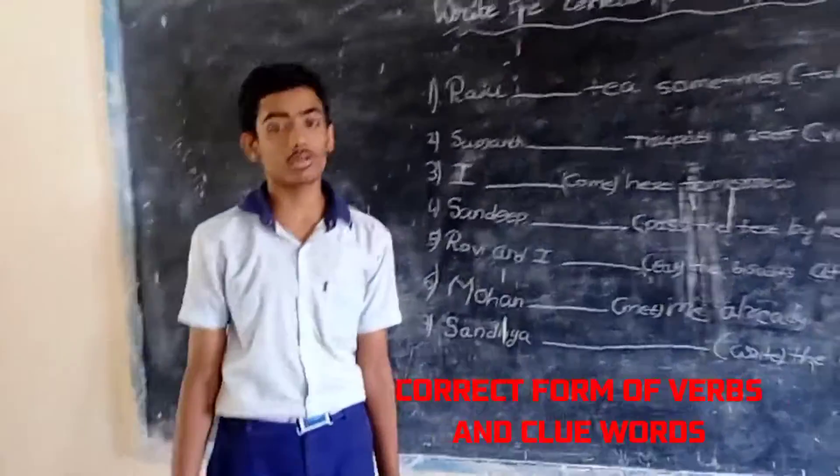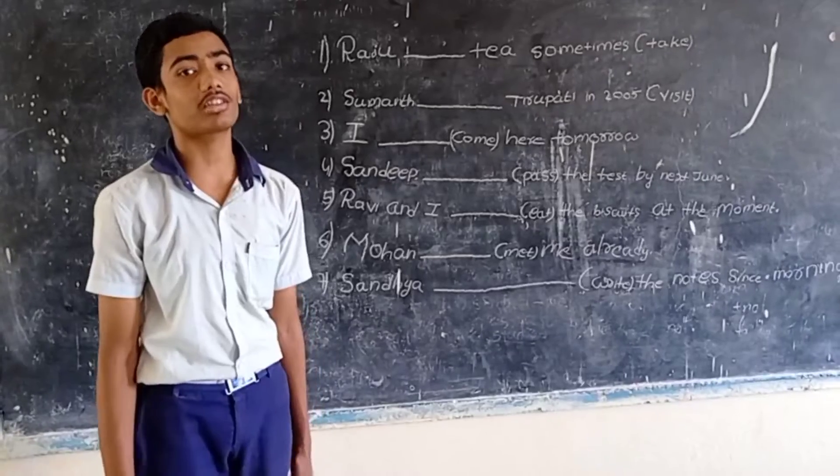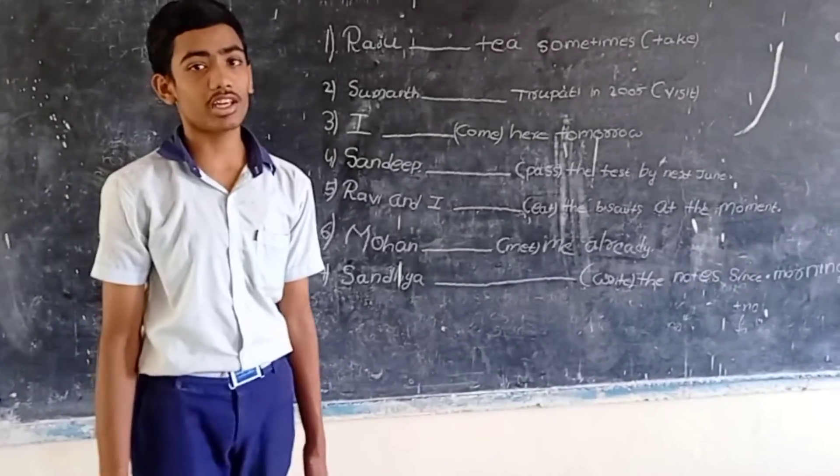Now then, already, at the present, at the moment, look these days, these months. These are the clue words for present continuous.